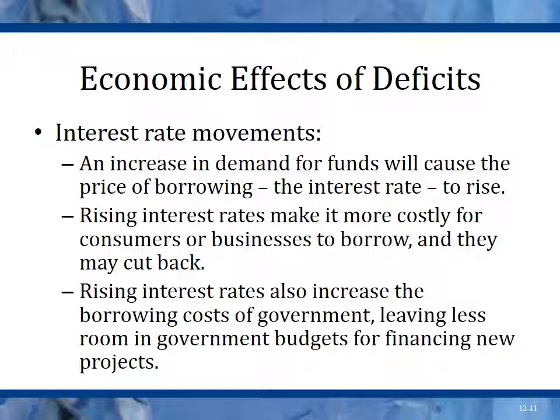Banks can borrow from the Federal Reserve for free, at 0% interest. Ben Bernanke and the Federal Reserve Board can set interest rates and kept them low. So when the textbook talks about interest rate movements, that would be a market economy driving rates up — but that didn't happen because interest rates were essentially set at their low.